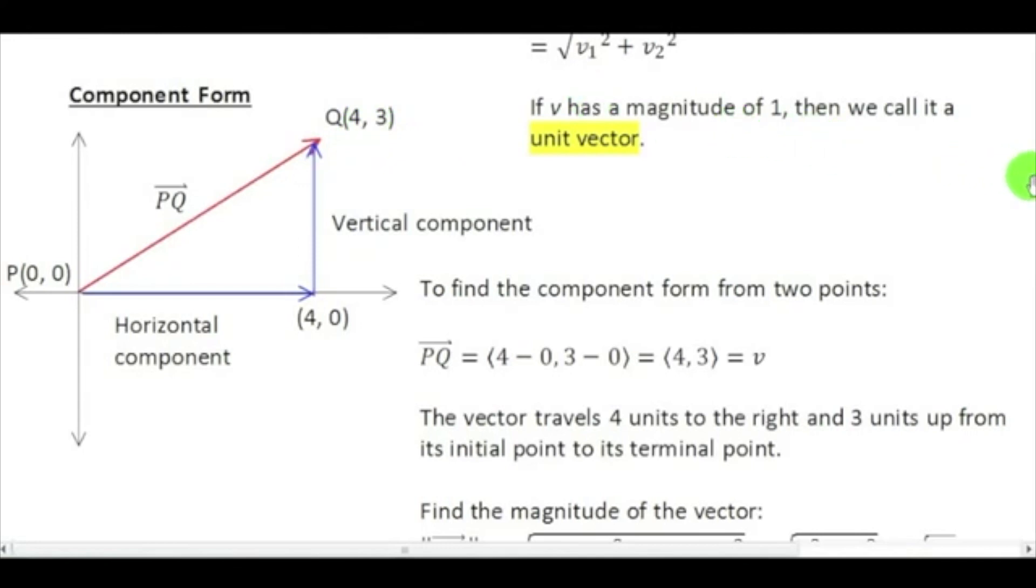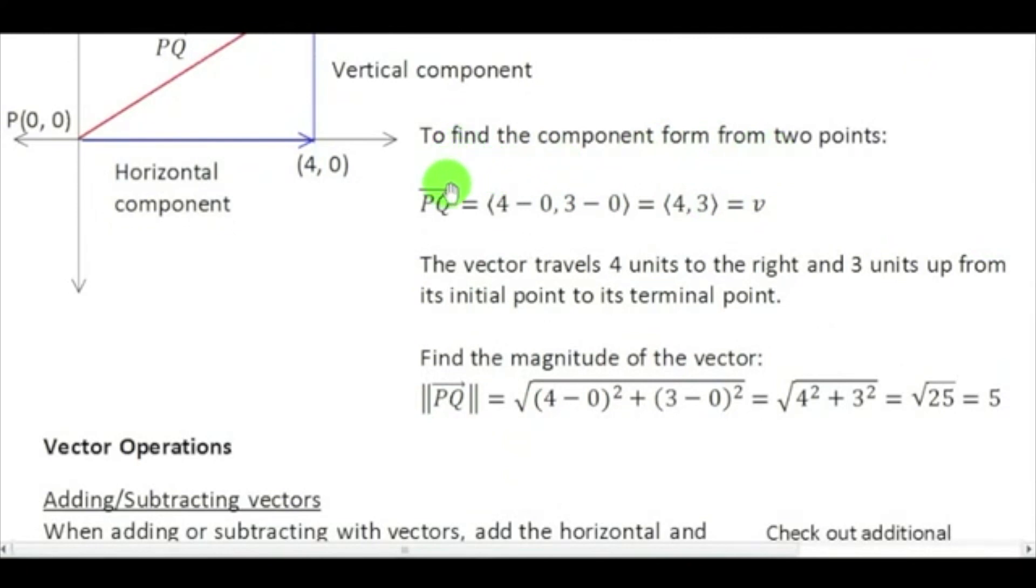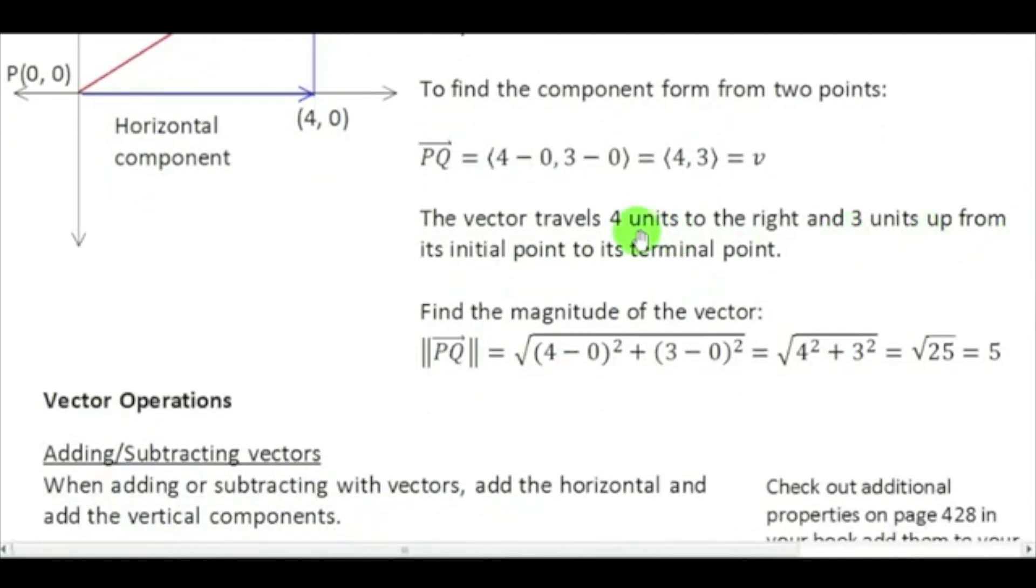Let's talk about finding components. If I've given you PQ, you find four minus zero, three minus zero, so I get the vector four, three. It doesn't always work out to be the same number, but I had zero, zero as one of my points. Basically, we said it travels four units to the right and three units up. Find the magnitude just like before. I'm going to plug it in, work it out, and go here.